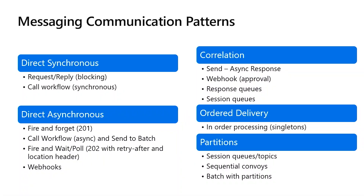For ordered delivery, we have the singleton pattern — as you're reading messages off a queue, you can change it from running highly parallelized to processing one message at a time. And finally, partitioned messaging allows you to have all messages for a given entity — say, all of Bob's messages as he goes through a hospital — go into one session or be correlated, using batch session queues, topics, or sequential convoys. For BizTalk users, we do sequential convoys.